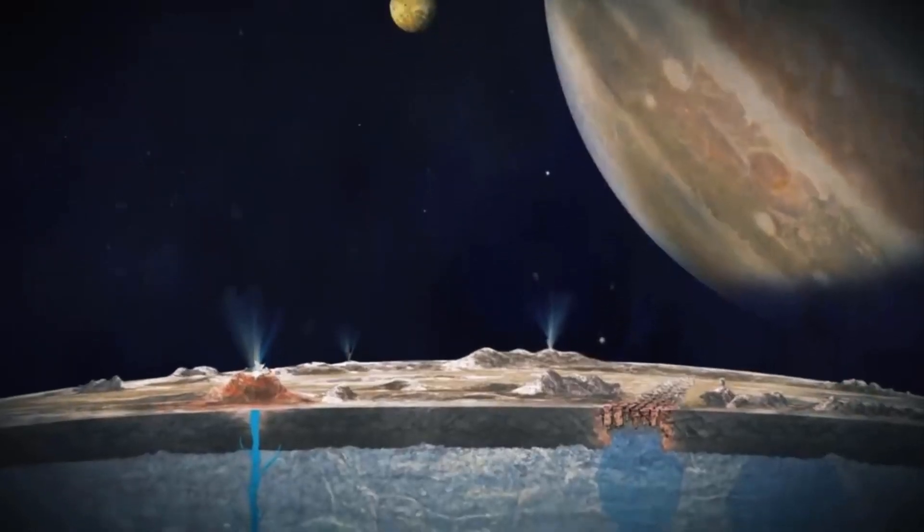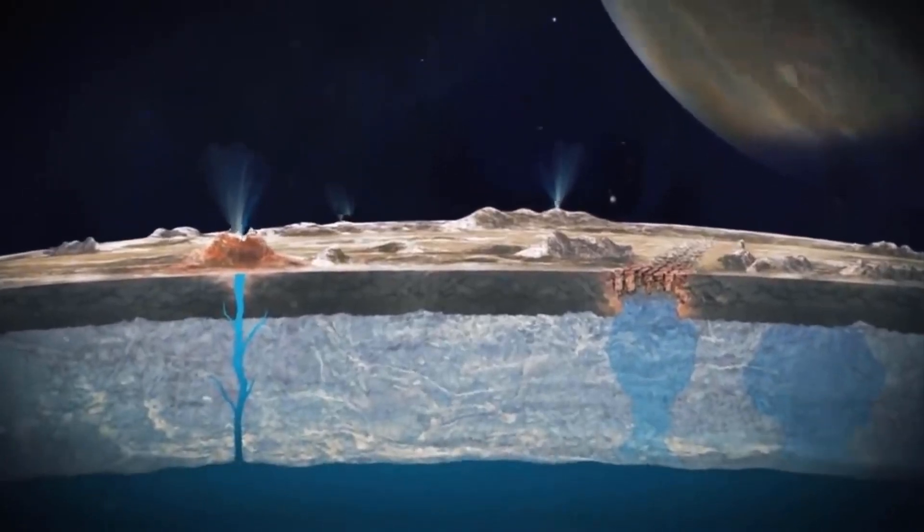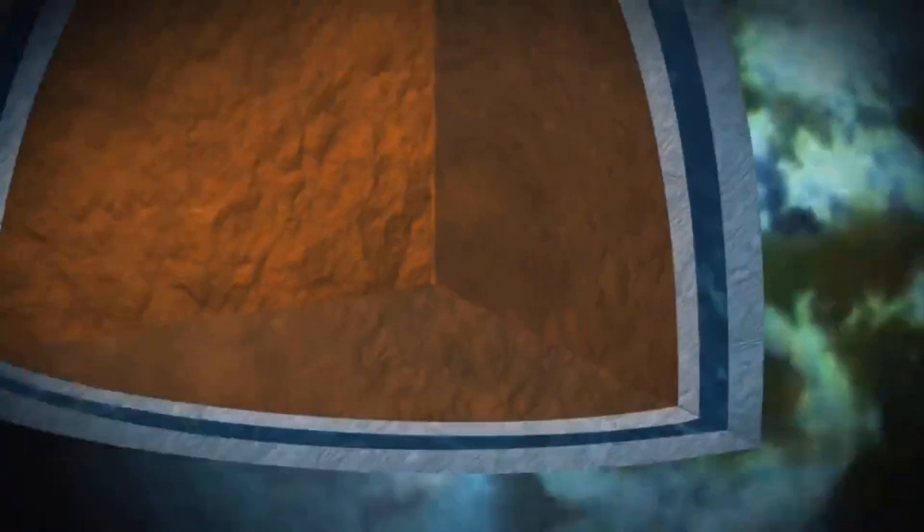In particular, the south polar region of Enceladus is almost entirely free of impact craters. The area is also littered with house-sized ice boulders and regions carved by tectonic patterns unique to this region of the moon.